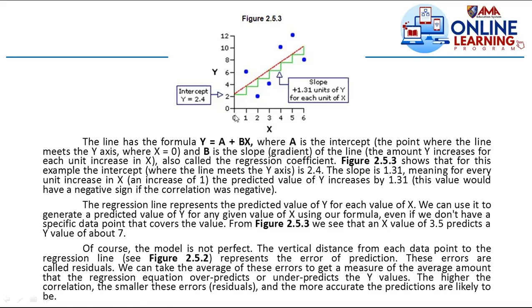When x is zero, we get the y-intercept; when y is zero, we get the x-intercept. The slope is 1.31, meaning for every unit increase in x — an increase of 1 — the predicted value of y increases by 1.31. This value would have a negative sign if the correlation was negative.